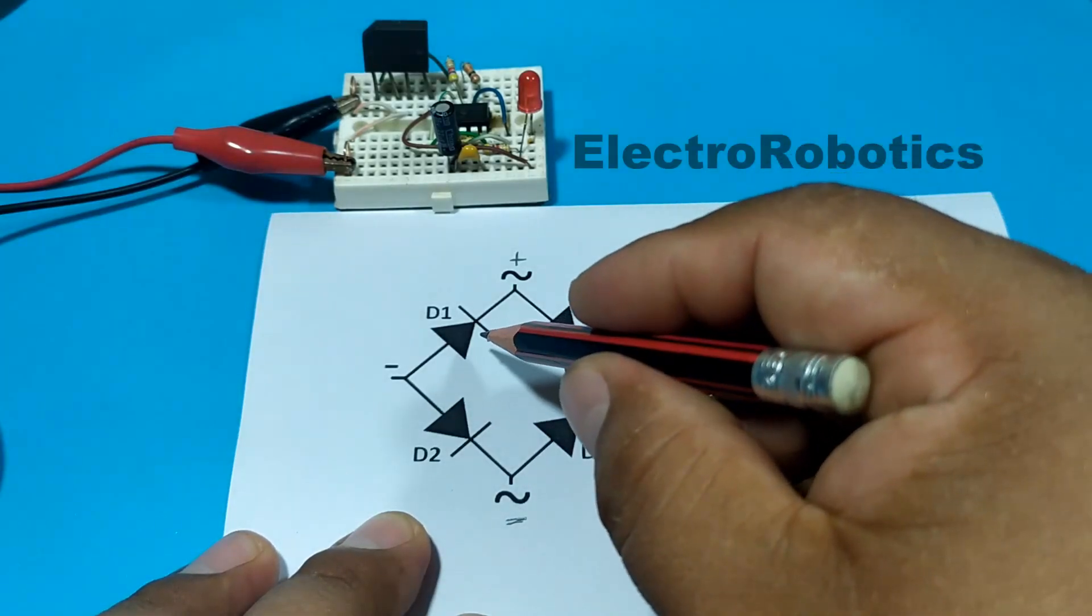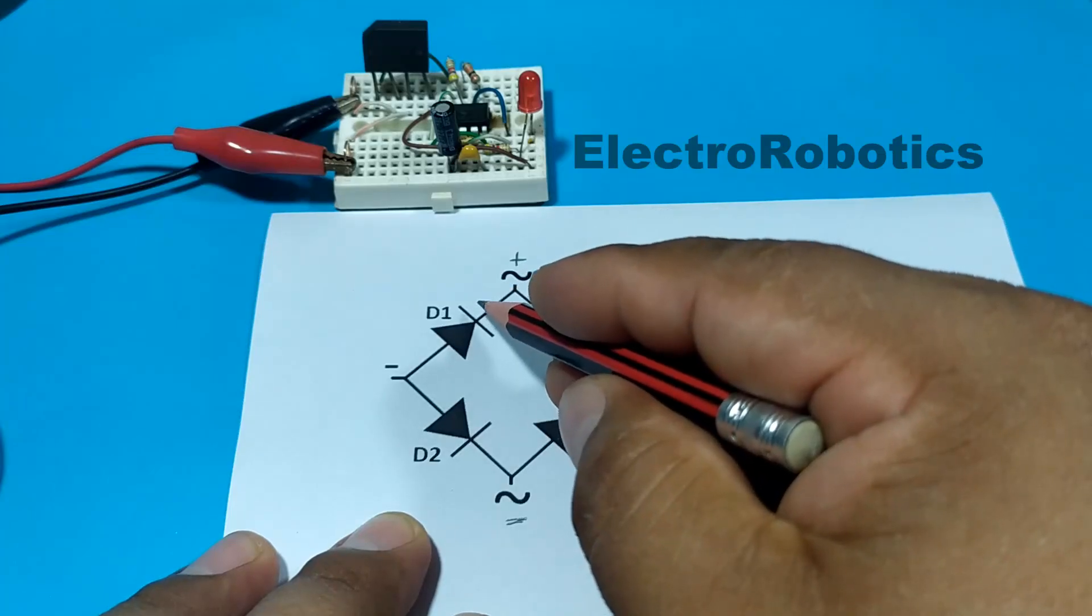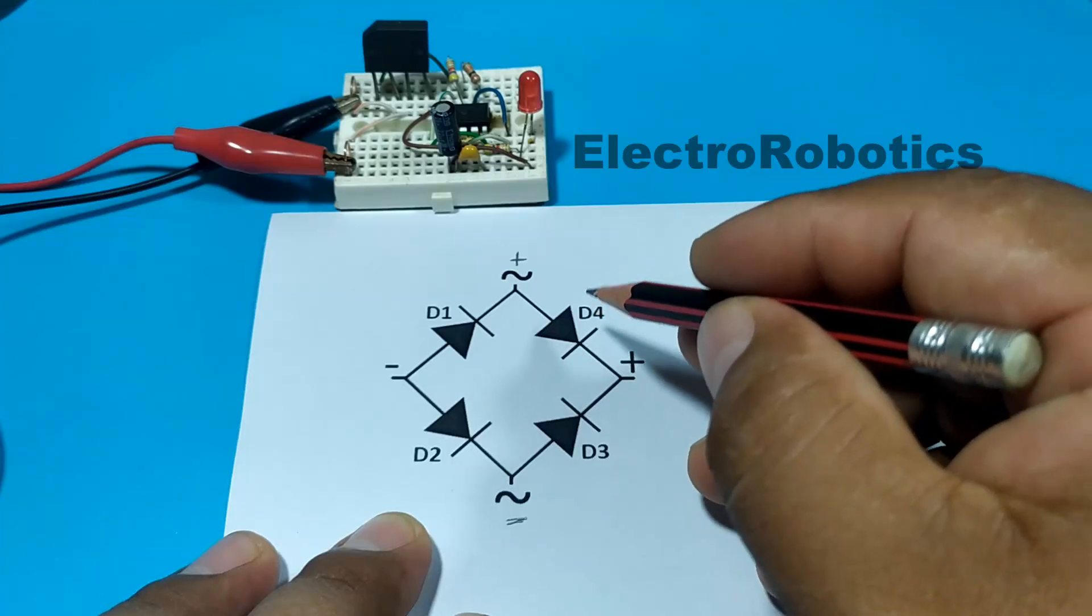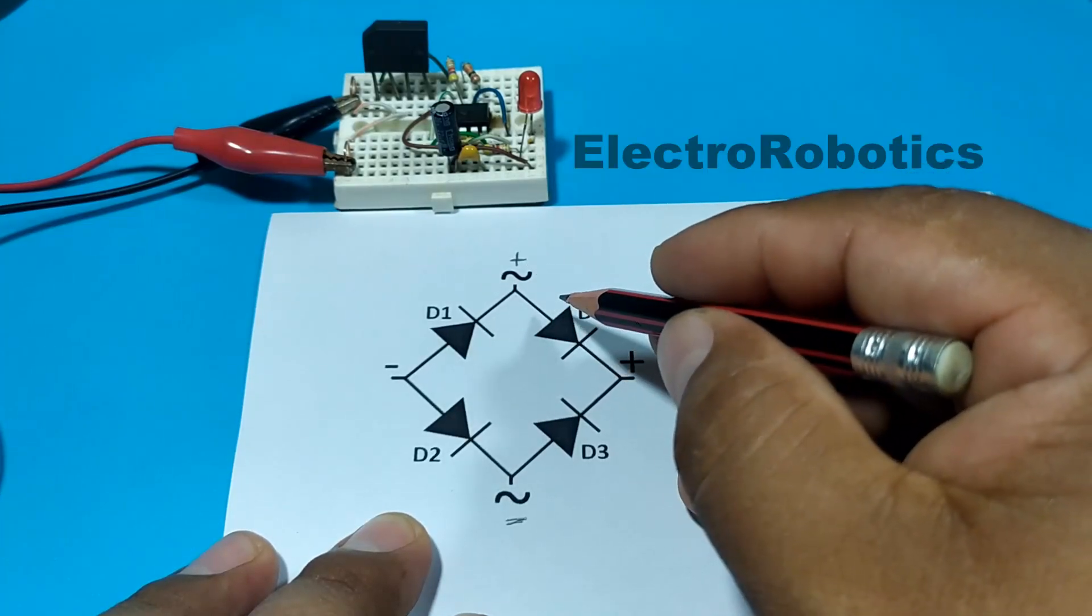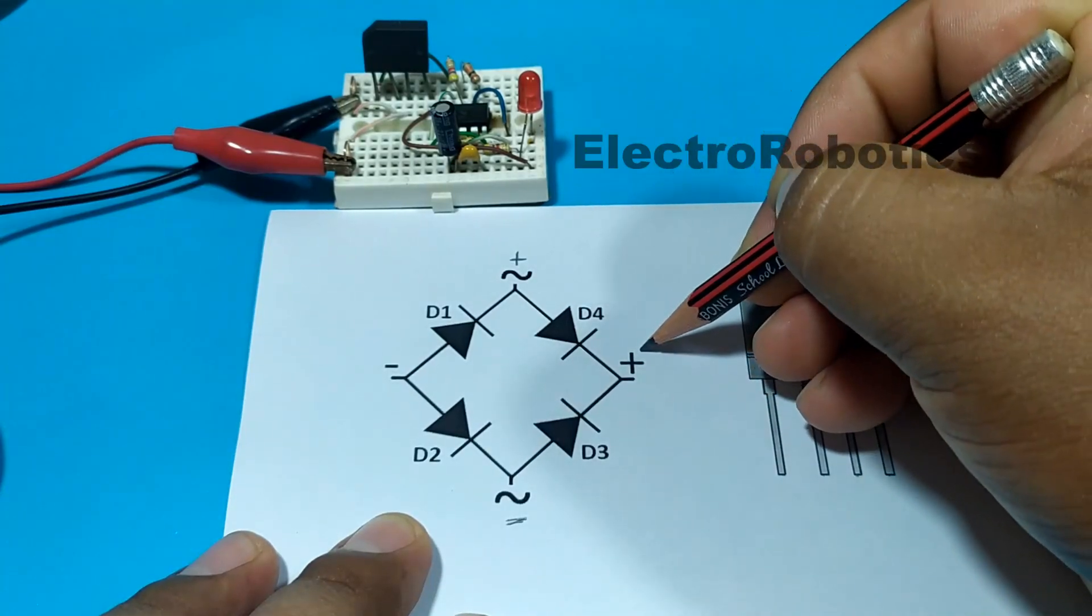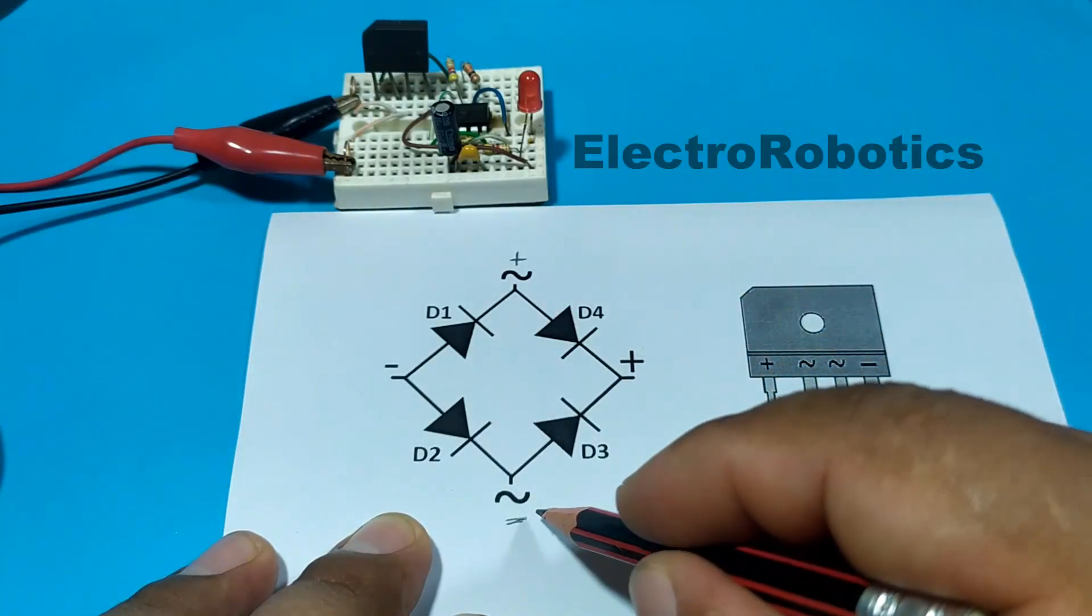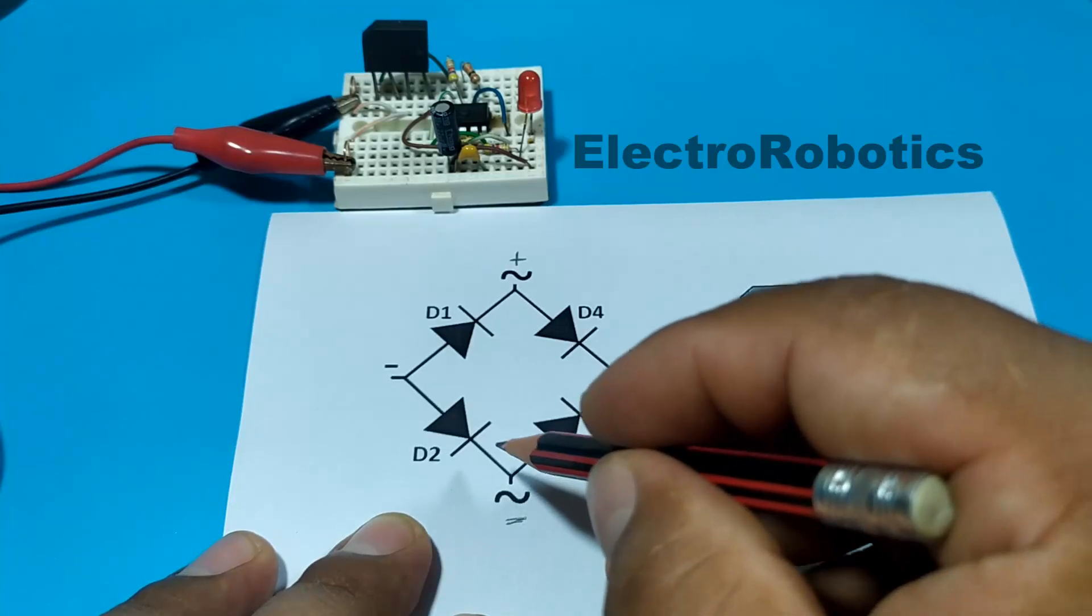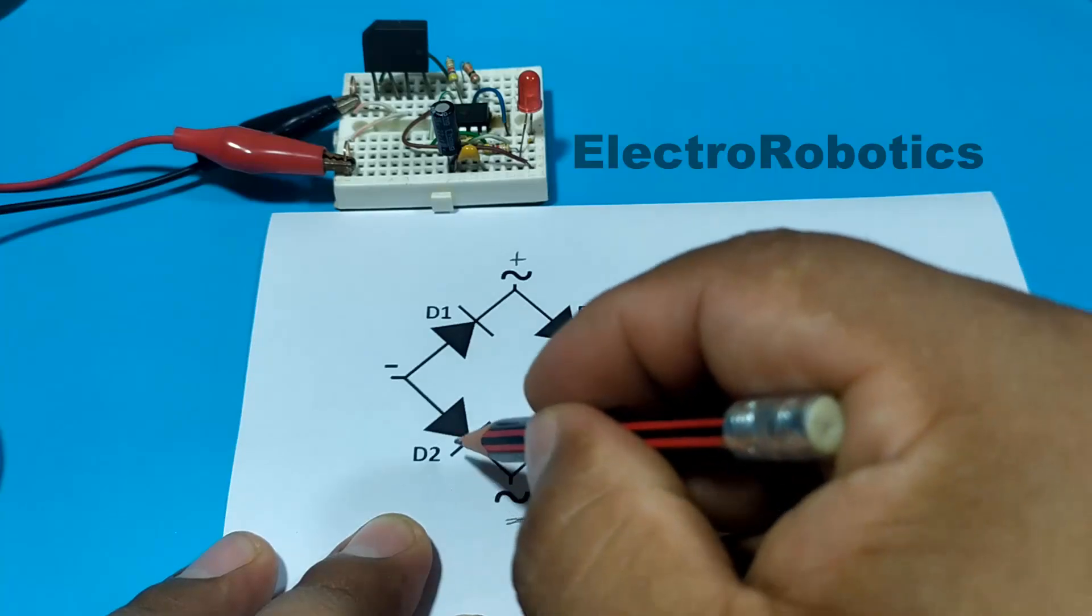Well, diode number 1 doesn't work because it is receiving positive at the cathode. However, diode number 4 does work because we have positive at the anode. Therefore, positive can go to positive. The negative cannot pass through D3, but negative can pass through D2 because it is a cathode. So negative will go to negative.